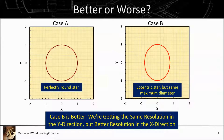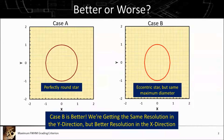If you think about it, you might agree with me that case B is a better image because we're getting the same resolution in the Y direction but better resolution in the X direction. So just keying on eccentricity is not the best way to go in terms of selecting and defining image quality. We need to be thinking about the maximum diameter of the circle or the maximum axis of the ellipse, and that's what we ought to be thinking about in terms of defining and grading our subframes.